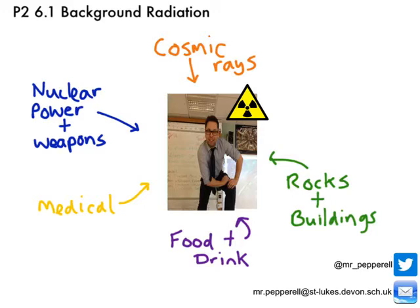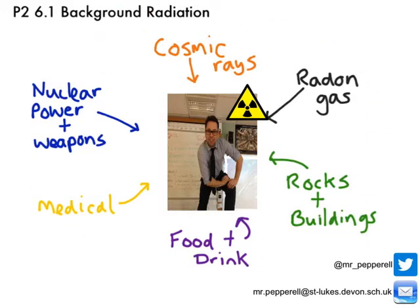The last natural source of background radiation — the one that provides by far and away the most exposure — is radon gas, and that accounts for about half, or 50%, of our exposure. Radon gas is a product of the radioactive decay of uranium, which is present in rocks such as granite. Here in the southwest, on Dartmoor and particularly in Cornwall, there's a lot of granite and therefore a large amount of exposure to radon gas. People in Cornwall will even have houses with radon gas detectors inside them.